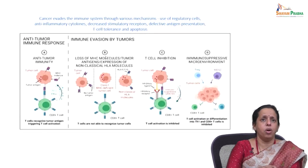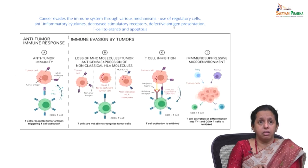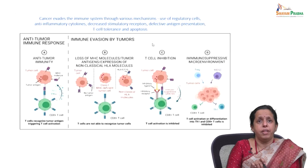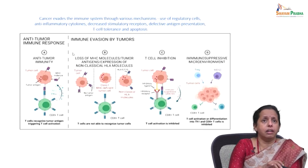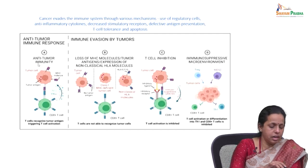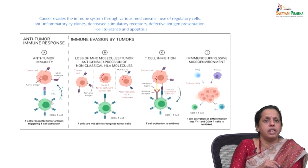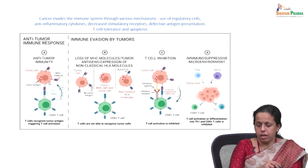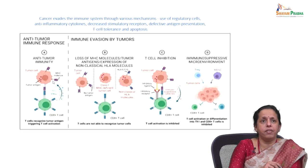Cancer evades the immune system — an established fact — through use of regulatory cells, anti-inflammatory cytokines, decreased stimulatory receptors, defective antigen presentation, T cell tolerance, and evasion of apoptosis. In anti-tumor immunity, T cells recognize tumor antigens, triggering T cell activation when presented via MHC class molecules. T cells are the preferred immune cells for targeting cancer, with the capacity to kill malignant tumor cells upon recognition by T cell receptors.